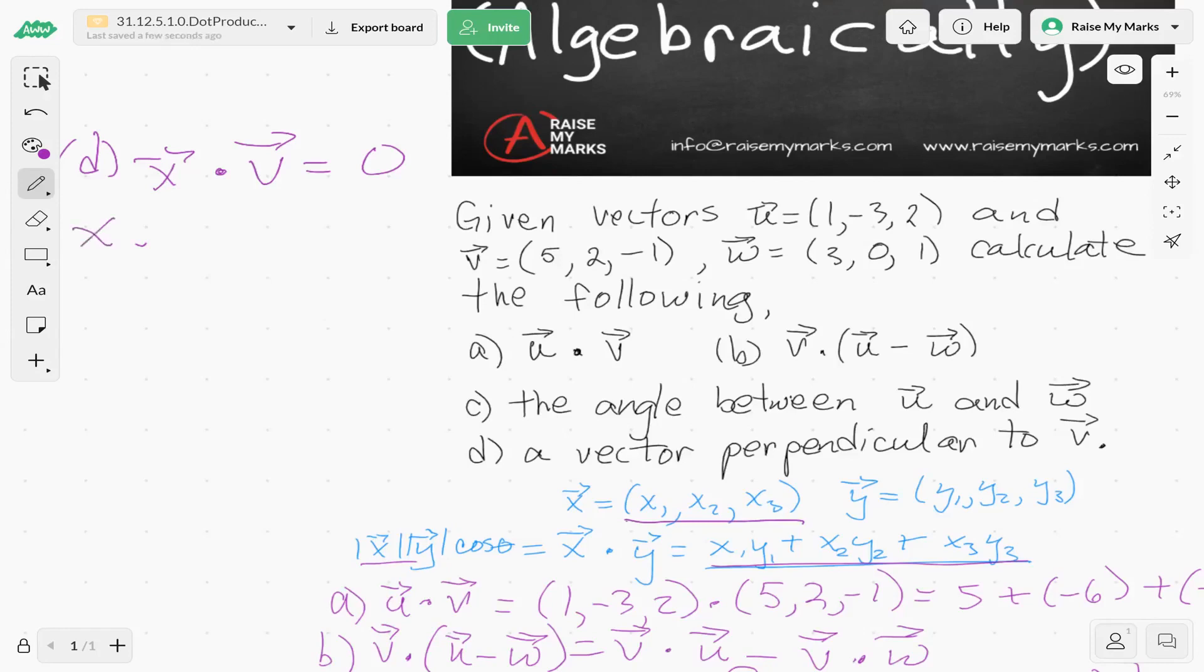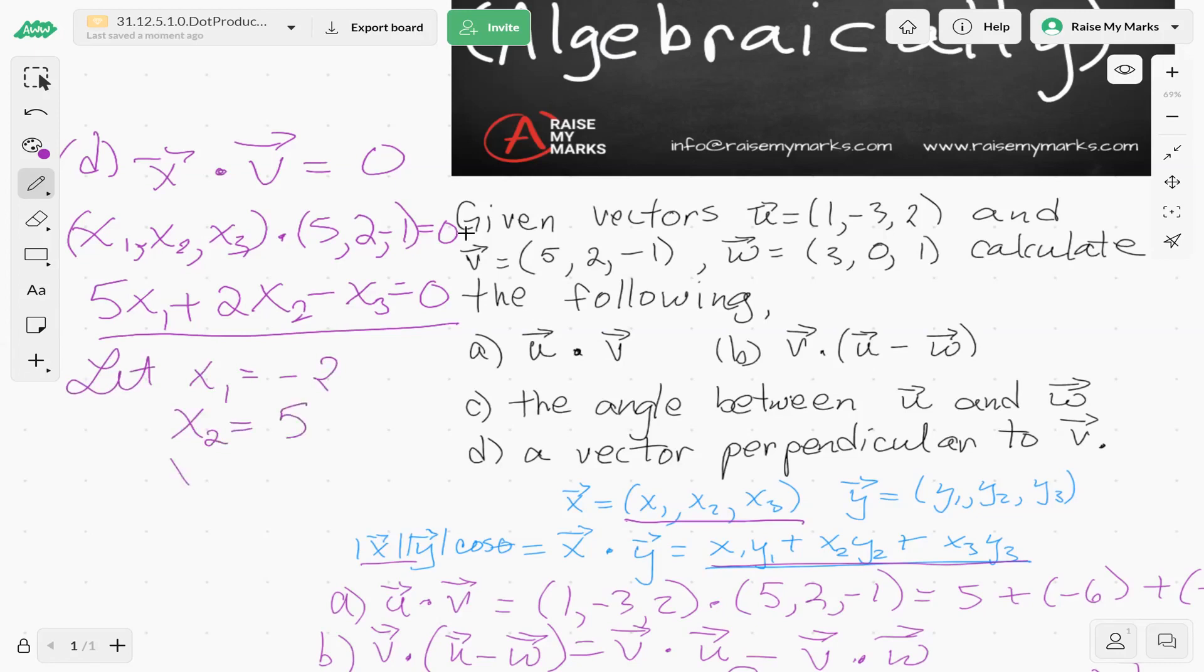Let's take their dot product. And we have v is (5,2,-1). The dot product we're going to force to be 0. We have 5x1 plus 2x2 minus x3, and that equals 0. So now we can just randomly choose values for x1, x2, and x3 that satisfy this equation. Well, how about let x1 equal negative 2, x2 equal 5, and x3 equal 0.